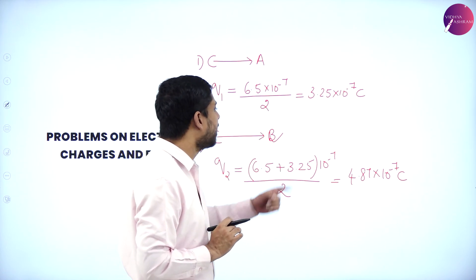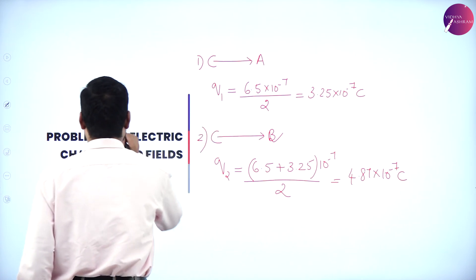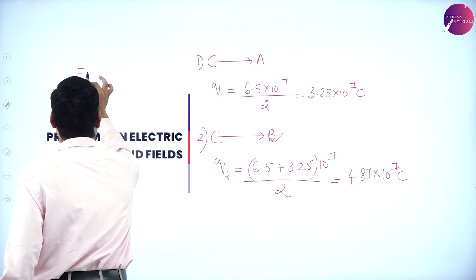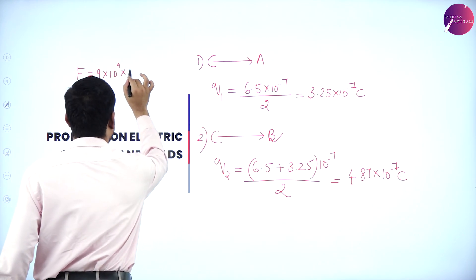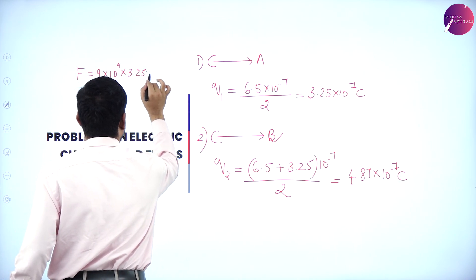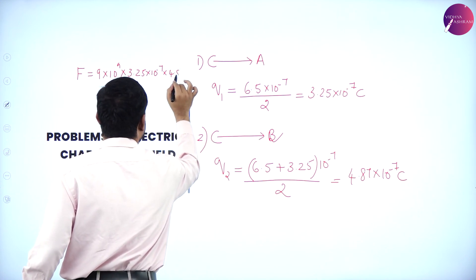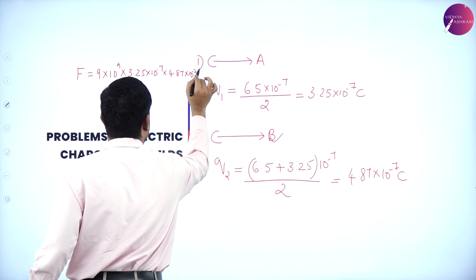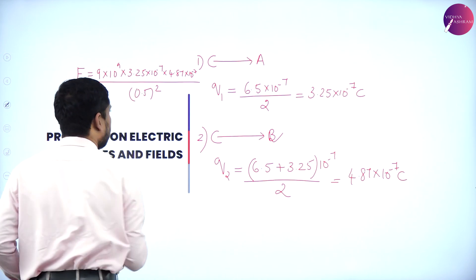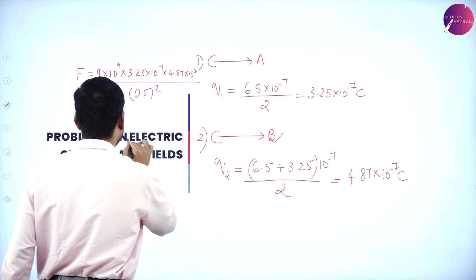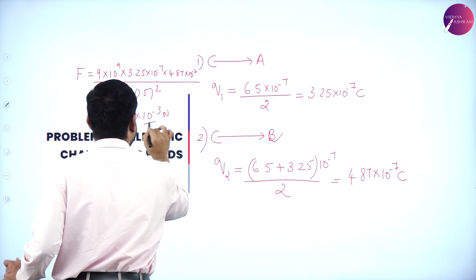So now Q1 and Q2 is known. I want the force of repulsion, again Coulomb's law. 9 into 10 power 9, Q1 is 3.25 into 10 power minus 7, 4.87 into 10 power minus 7 divided by 0.5 whole square. So on simplification this is 5.7 into 10 power minus 3 newton.